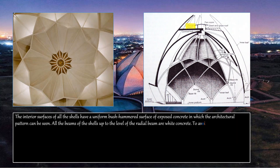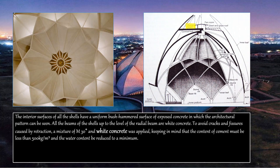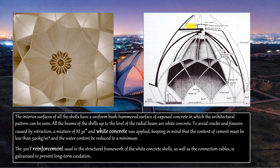The interiors of all the shells have a uniform bush-hammered surface of exposed concrete in which the architectural pattern can be seen. All the beams of the shells up to the level of the radial beam are white concrete. To avoid cracks caused by retraction — usually seen in concrete — a mixture of M30 was used, keeping the cement content less than 500 kg per cubic meter and reducing water content. The 300 tonnes of reinforcement used in the structural framework of the white concrete shells and connection cables is galvanized to prevent long-term oxidation.